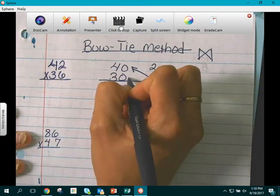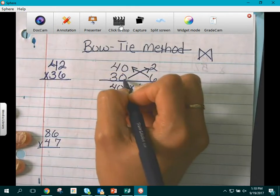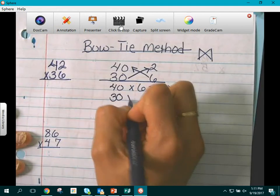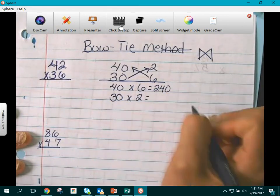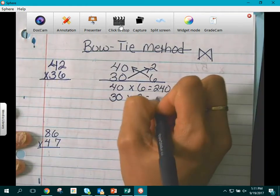Our next step is we are going to cross this way and we are going to multiply 30 times 2. When we multiply 30 times 2 we get the product of 60.